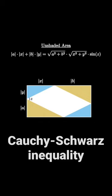Because the sine of z is less than or equal to 1, we see that the original unshaded area is less than or equal to the product of the two side lengths of the parallelogram.